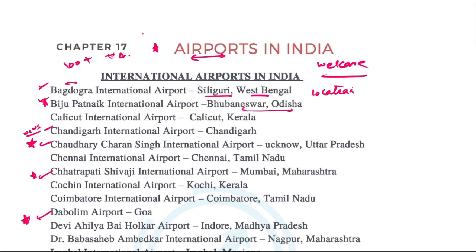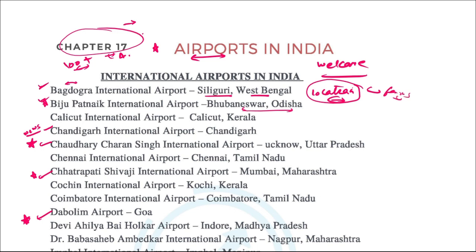Welcome to today's video. We'll be discussing Chapter 17 of the book Aviation and Business Management, and the topic is airports in India. There are more than 100 plus airports, and remembering all these names is quite difficult, so I'll be highlighting and briefing some of the important ones. Many airports are named after their location, and some are named after famous leaders or famous places.